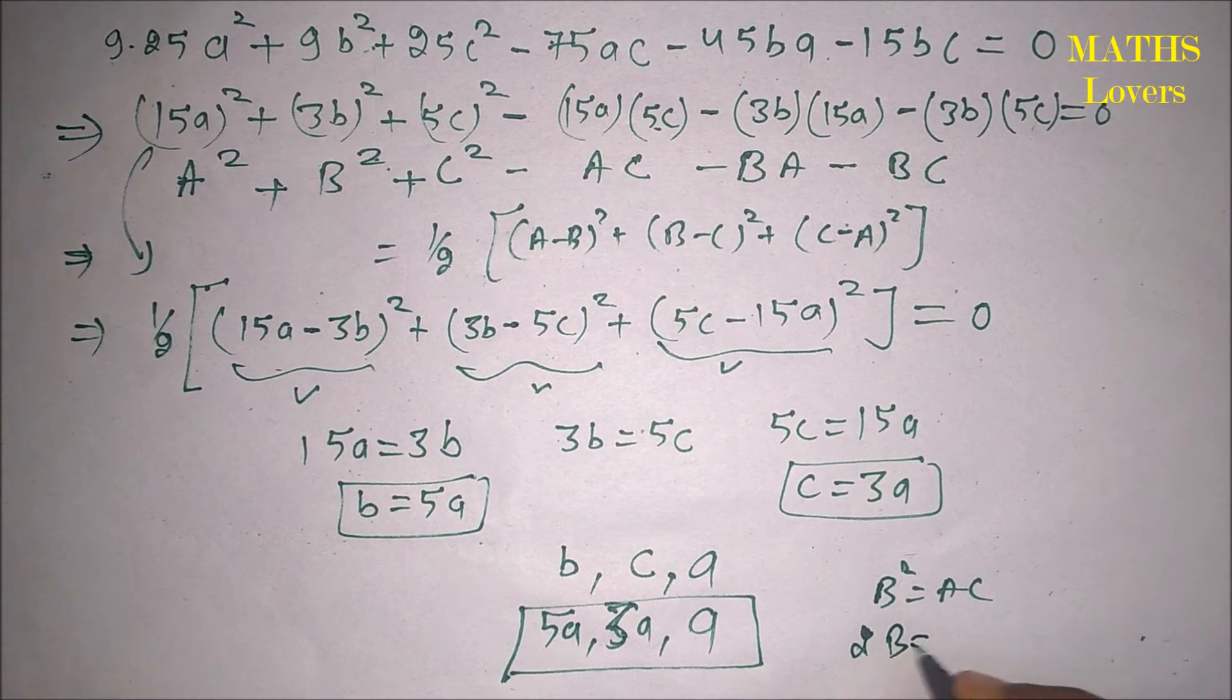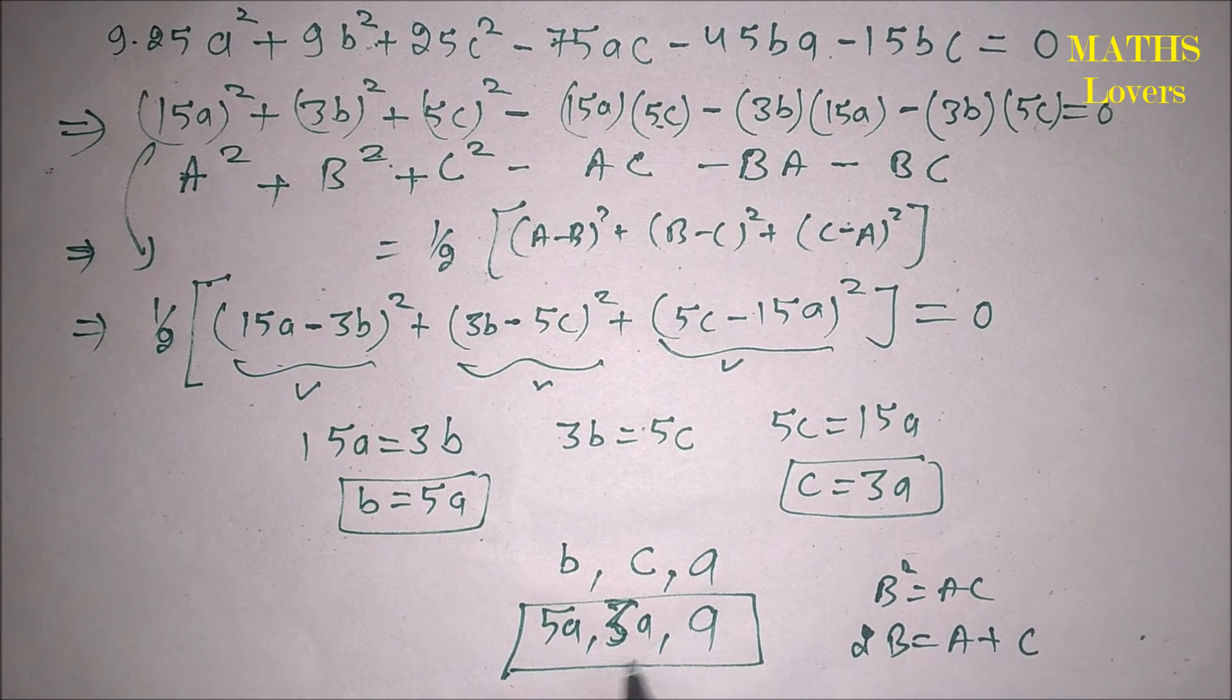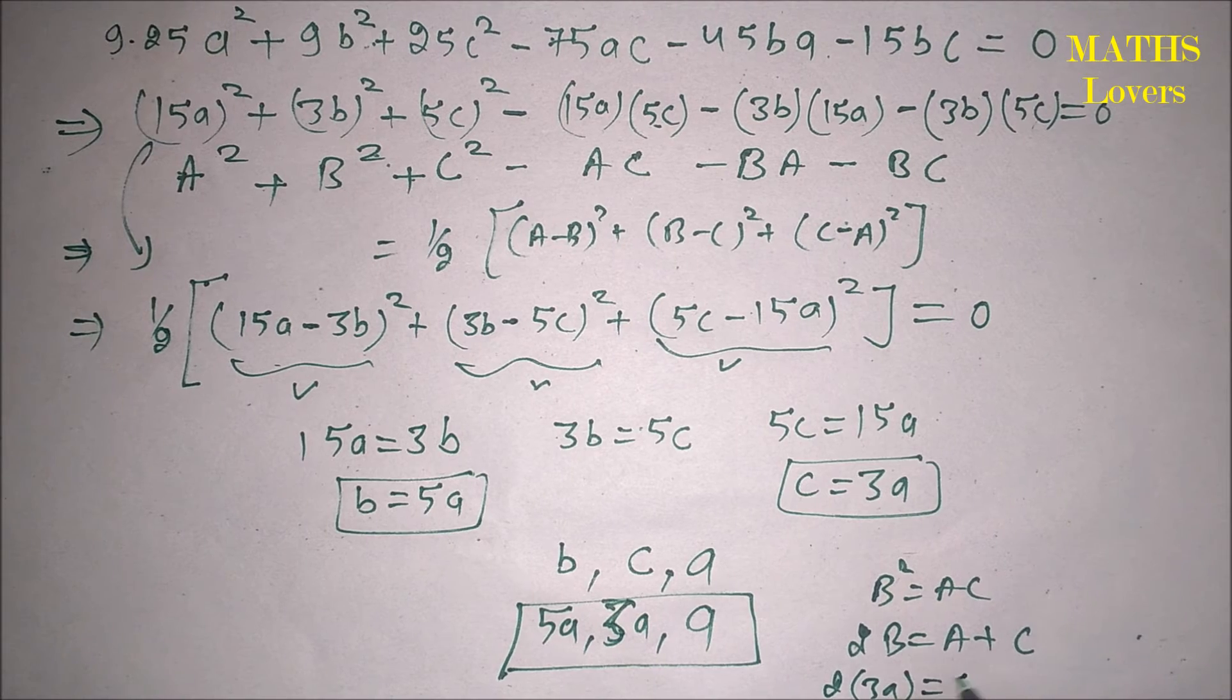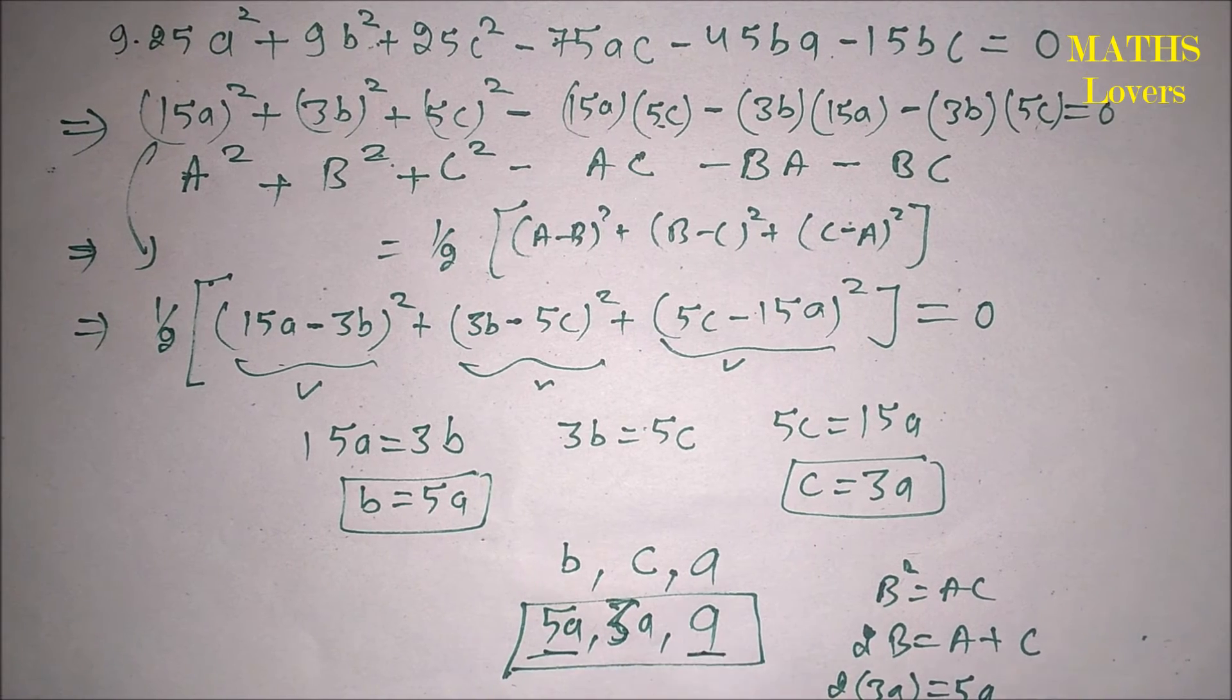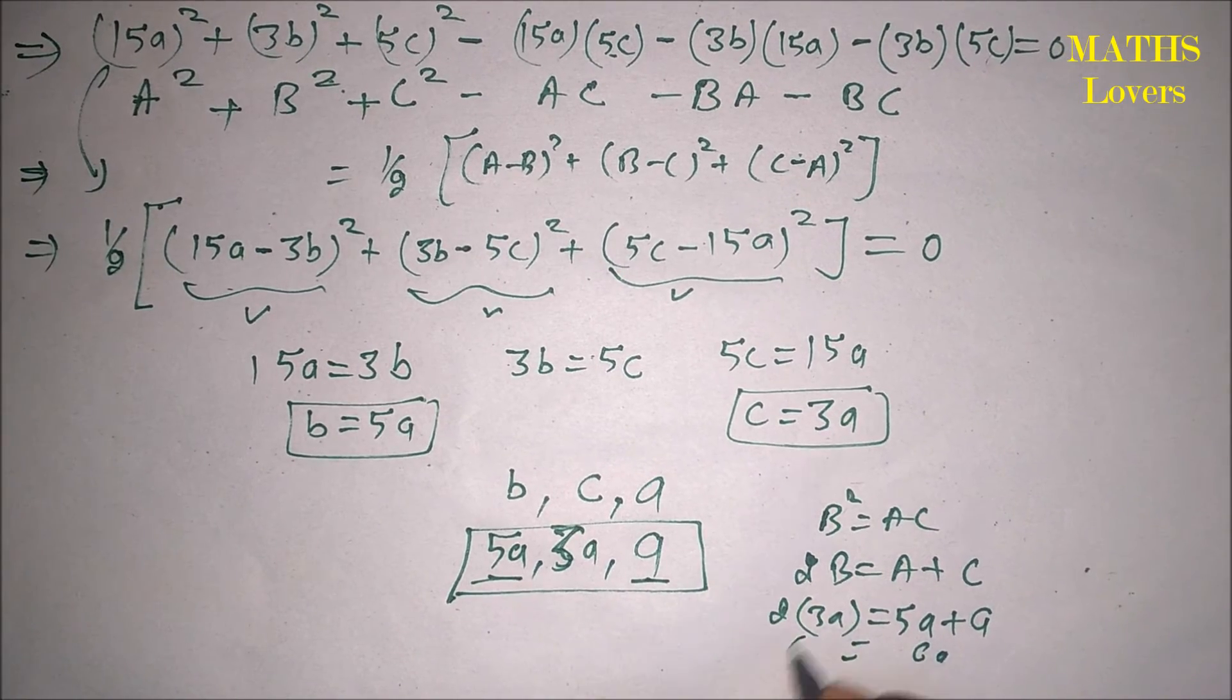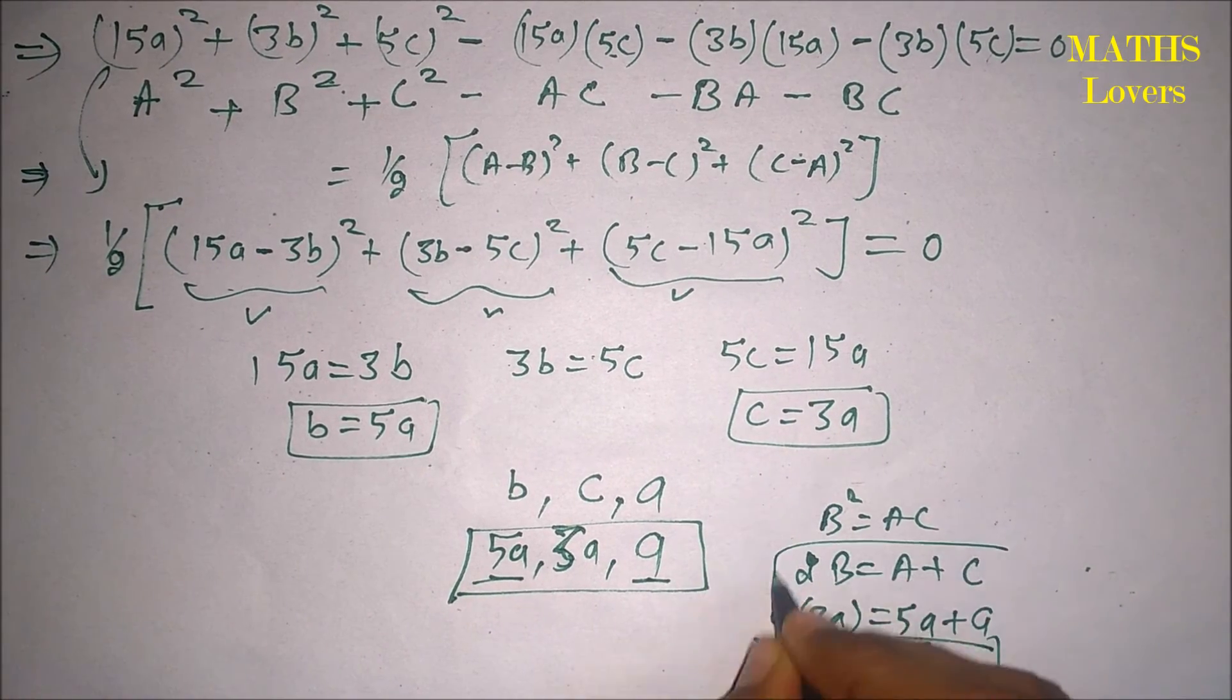then twice of the middle term should be the sum of first and last. So we can see that twice of 3a is 6a, and 5a plus a is also 6a, so the condition is fulfilled